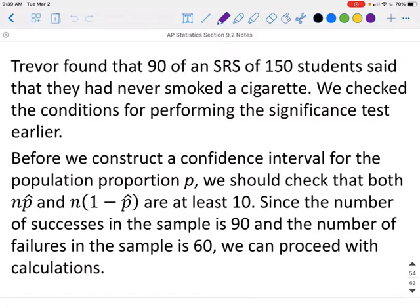that both n times the probability of success and n times the probability of failure are at least 10. Since the number of successes in this sample is 90 and the number of failures is 60, we can proceed.